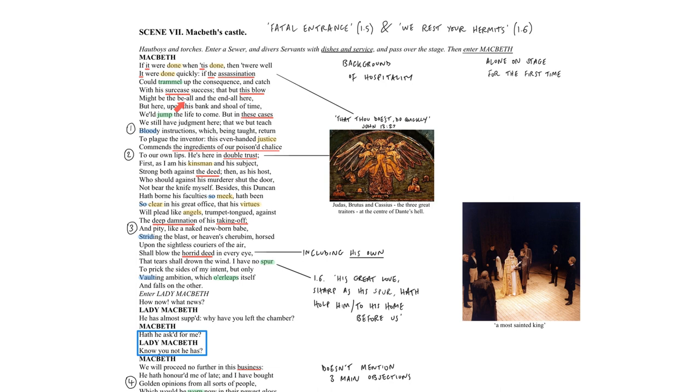Macbeth longs for this one blow to be the be-all and end-all. If that can be assured, then he will be willing to jump, i.e. risk the life to come, which is heaven. The echoing of the word done around 40 times across the whole play reminds us that it's never done with. But remember that the second meaning of trammel is to bind up a horse's legs, so throughout the speech you could develop that secondary connotation and tie some of these images together.